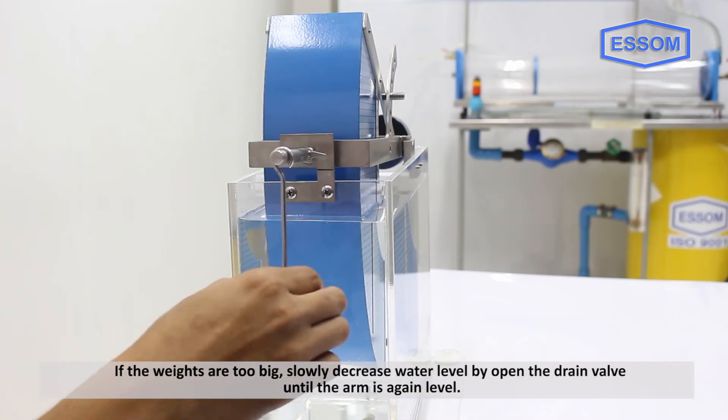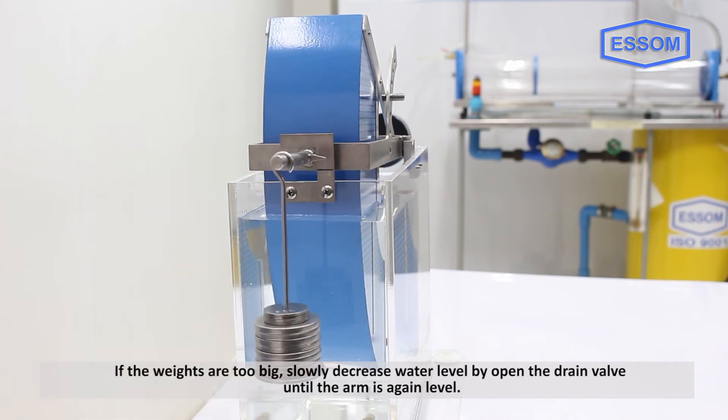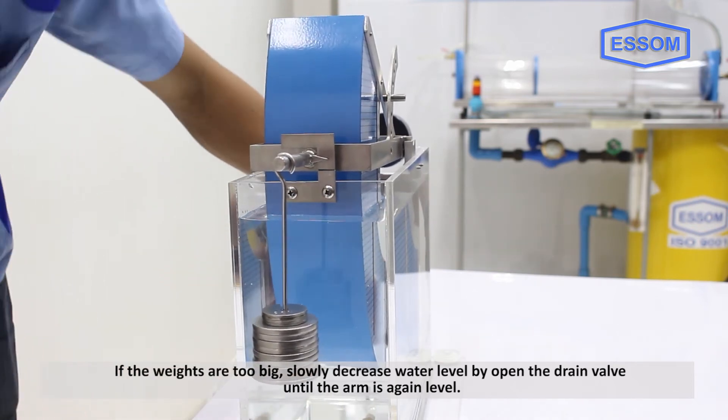If the weights are too big, slowly decrease water level by opening the drain valve until the arm is again level.